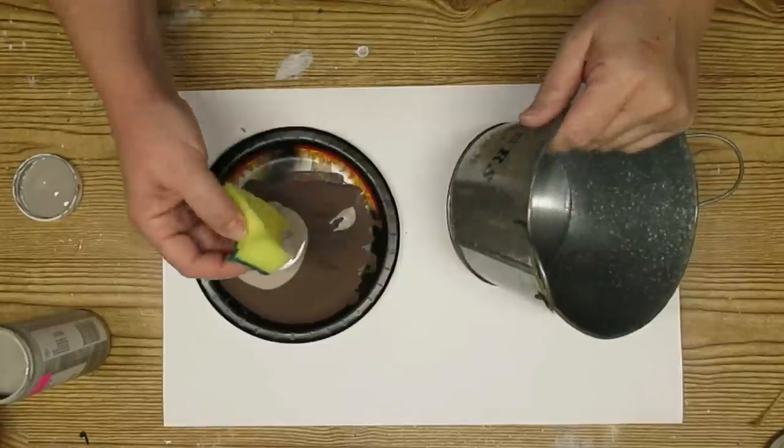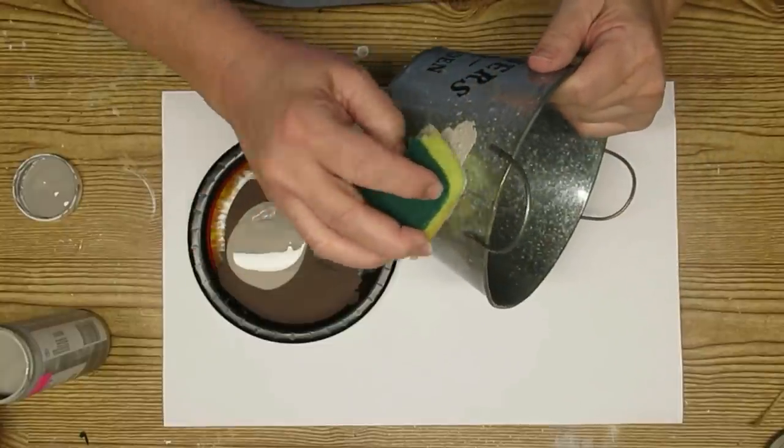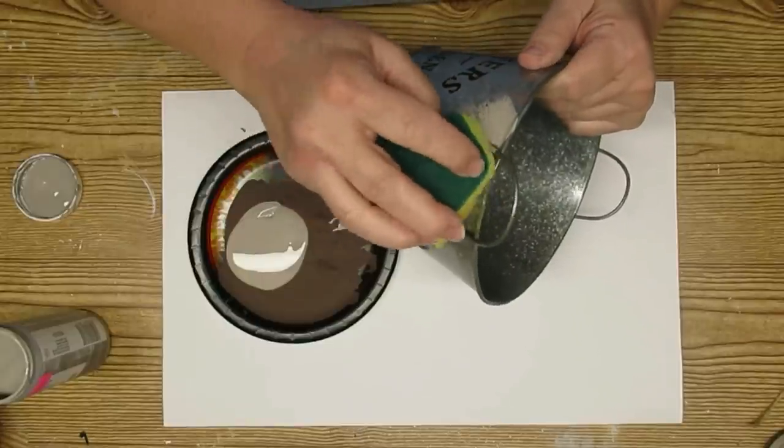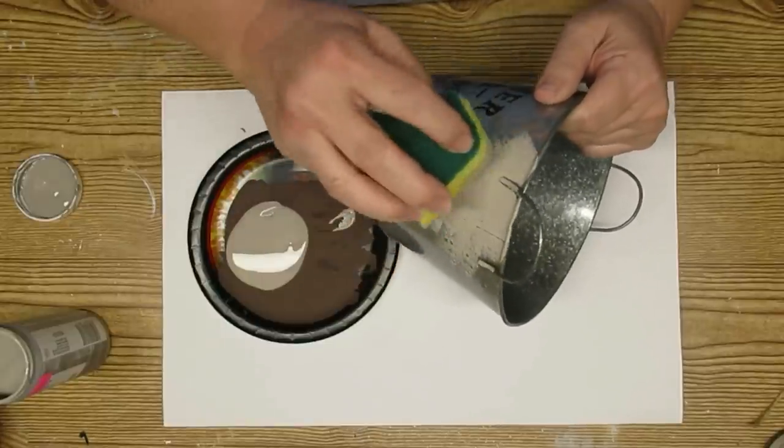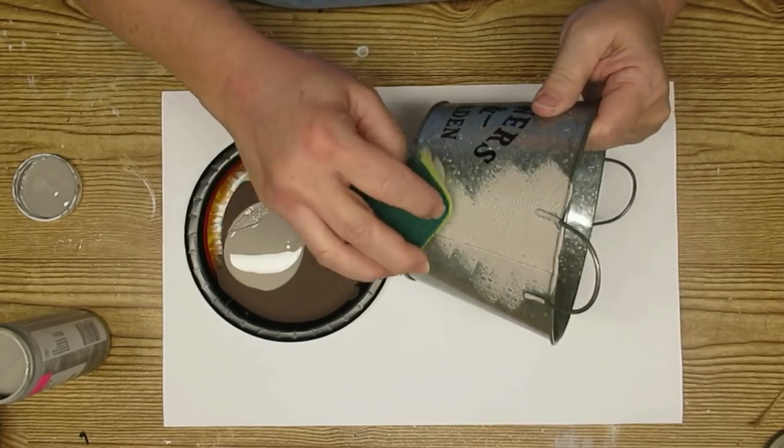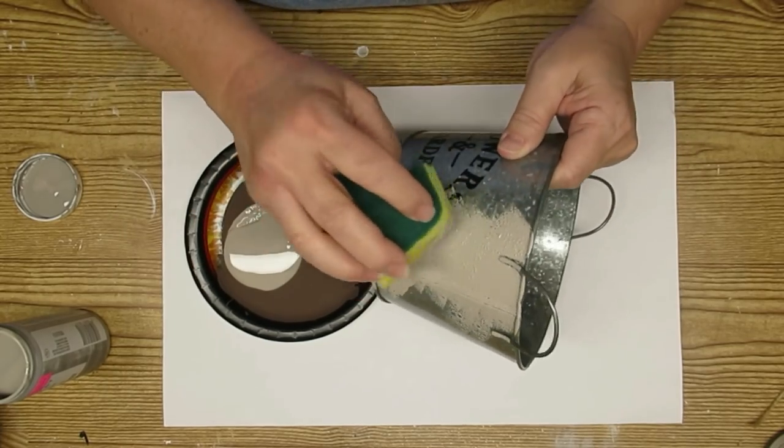DIY number four is one of my favorites. It turned out super sweet. I'm using one of these Dollar Tree tins and some clay Martha Stewart vintage chalk paint and just a regular kitchen sponge to pounce on some texture onto this tin.